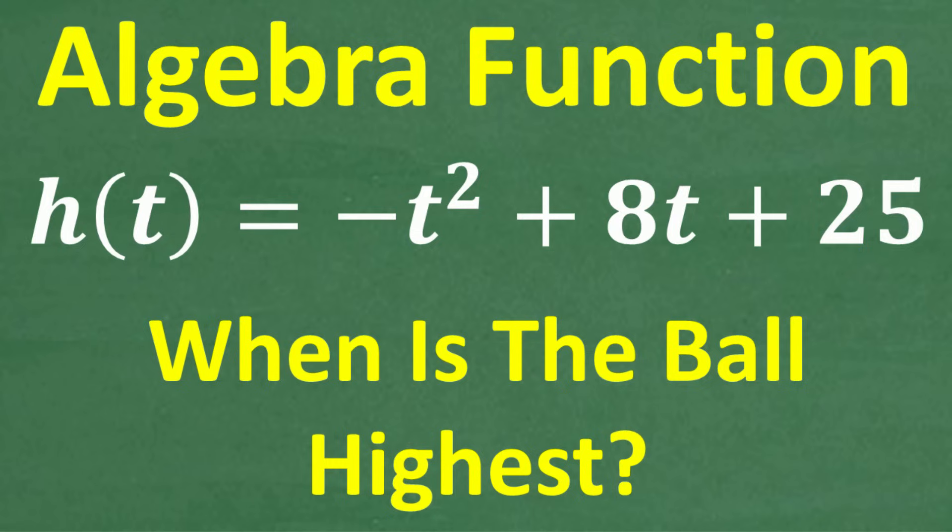h of t equals negative t squared plus 8t plus 25. The variable t is time in seconds, so as this ball is traveling, t represents the time in flight. h of t is the height of the ball in feet. The question is when is the ball at its highest, i.e., how many seconds into flight does this ball reach its maximum?